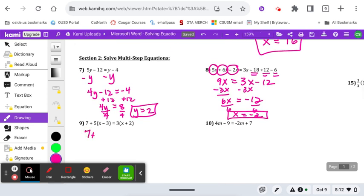This one requires some distributing. Be careful with your signs. Seven minus 15 is a negative eight.